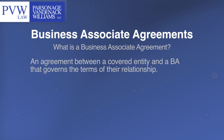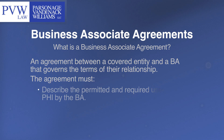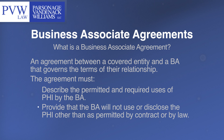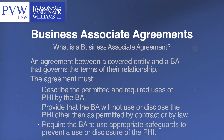There are specific requirements regarding the information that must be contained in a business associate agreement. For example, the agreement must describe the permitted and required uses of protected health information by the business associate, provide that the business associate will not use or further disclose the protected health information other than as permitted or required by the contract or as required by law, and require the business associate to use appropriate safeguards to prevent a use or disclosure of the protected health information other than as provided for by the contract.